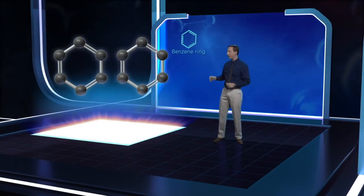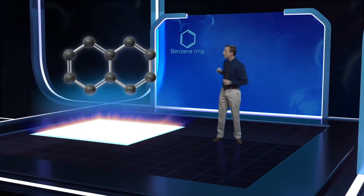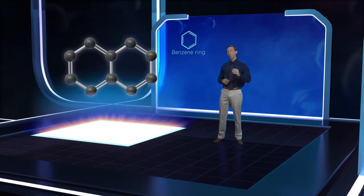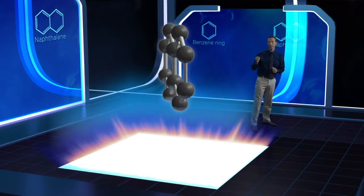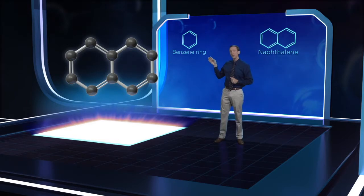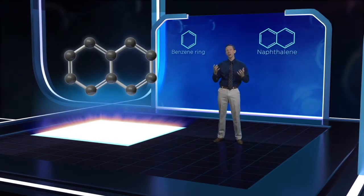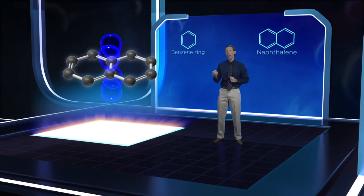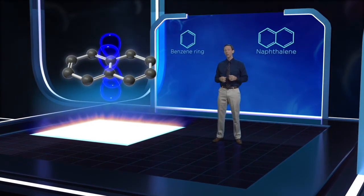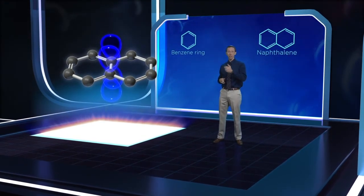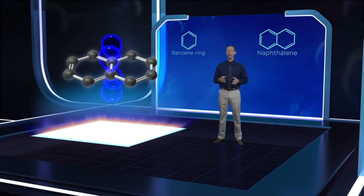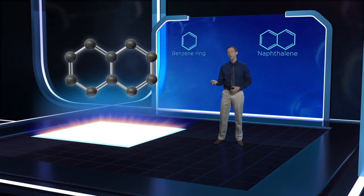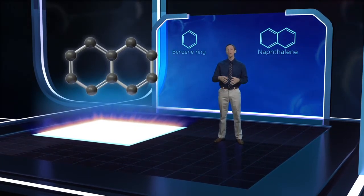Picture two benzene rings fused along one edge, essentially sharing a carbon-carbon bond. We call this compound naphthalene. Notice that by fusing the rings we create an aromatic system in which two rings share a common pair of p orbitals. So it should come as no surprise that naphthalene's resonance energy is about 252 kilojoules per mole, slightly less than two separate benzene rings, but substantial nonetheless.